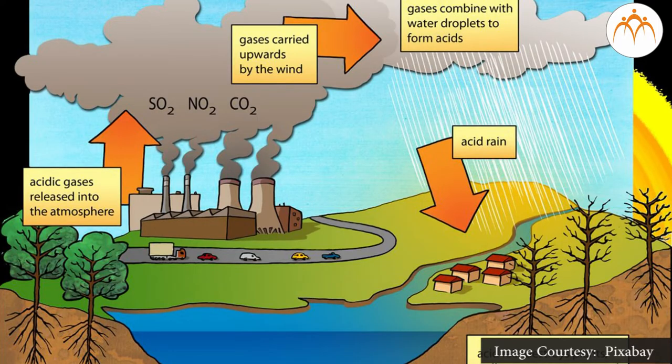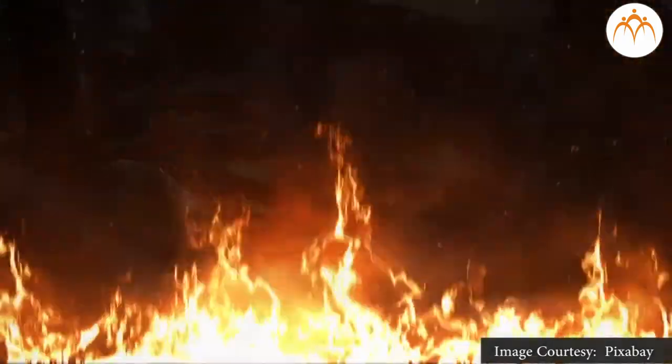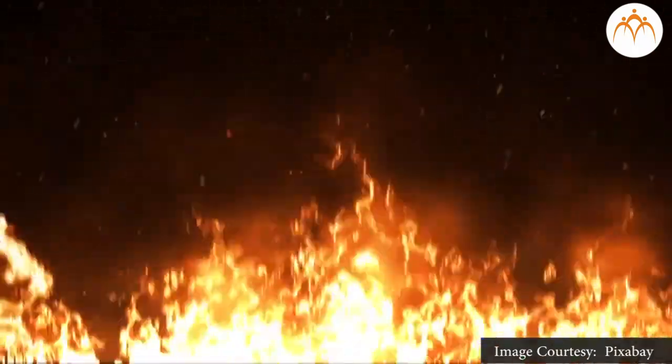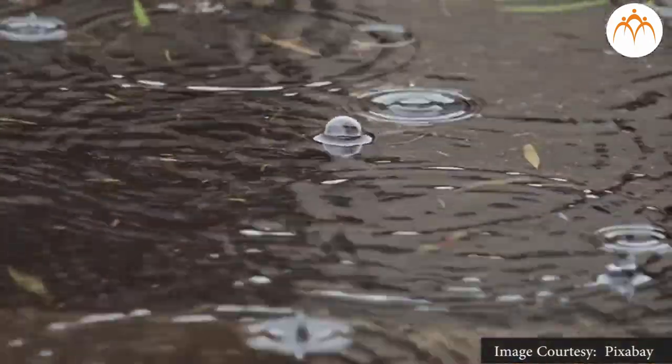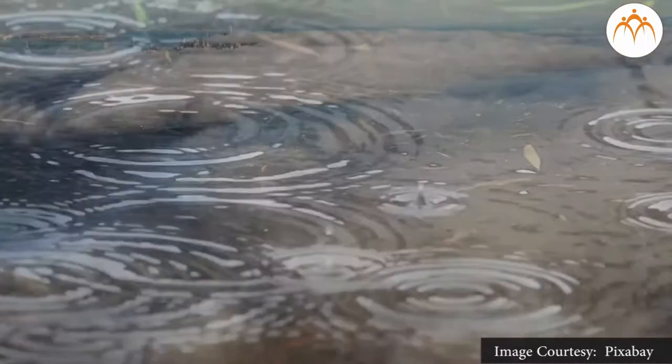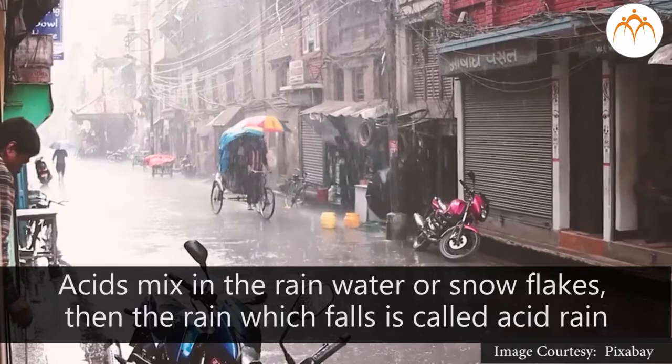Acid rain is a very grave health hazard created due to pollution. After burning coal, wood, and oil, the oxides of sulfur and nitrogen are released in water. They get mixed in rainwater, and from it, sulfuric acid and nitric acid get formed. When these acids mix in the rainwater or snowflakes, then the rain which falls is called acid rain.